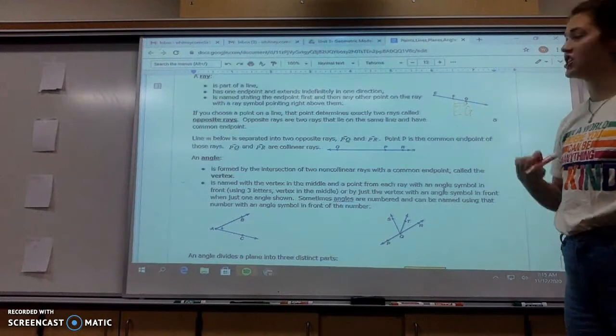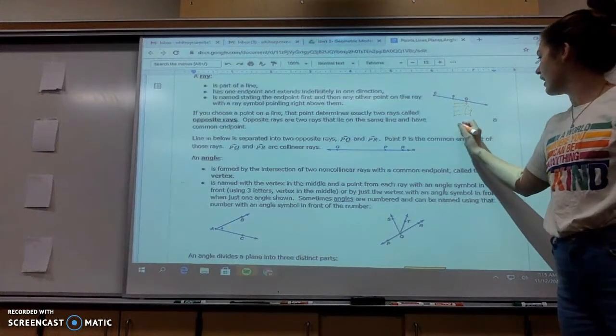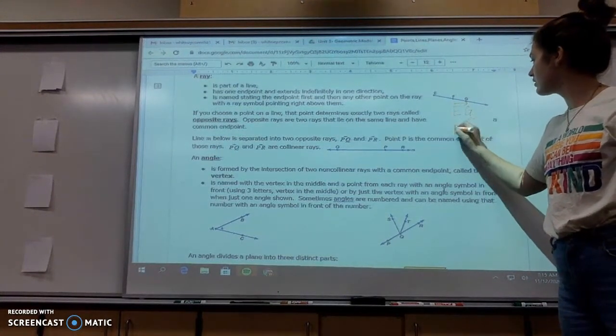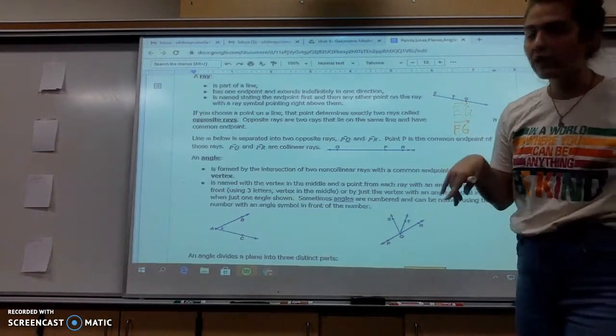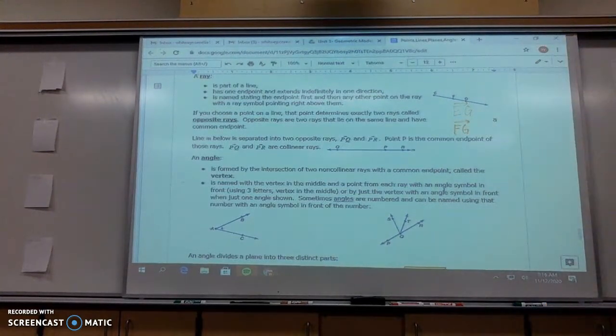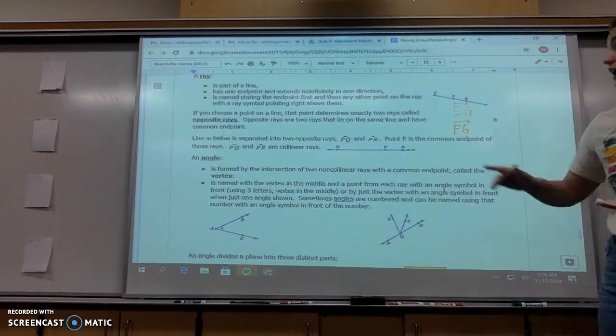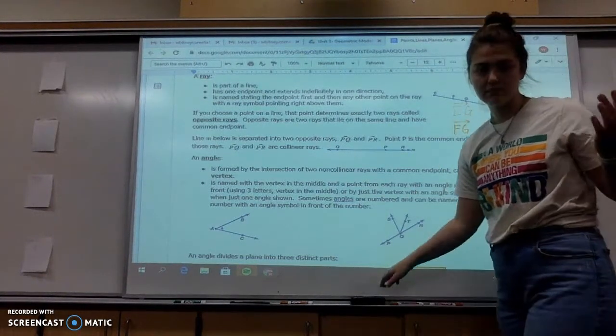Or we can name this FG, arrow going that way. So whatever way it goes on forever, that is where we hold the arrow or the point.